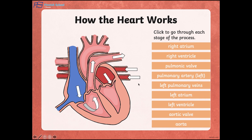Then the left atrium pushes the blood into the left ventricle. The blood is then pumped into the aorta, passing through the aortic valve, going to the aorta. The aorta carries the oxygenated blood to the different parts of the body, except the lungs.